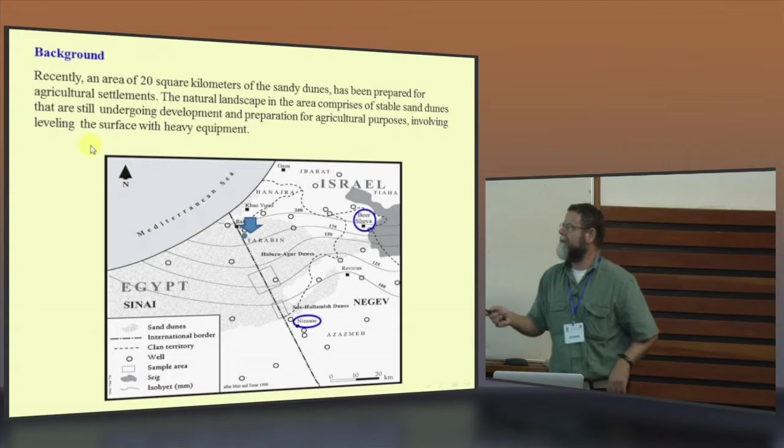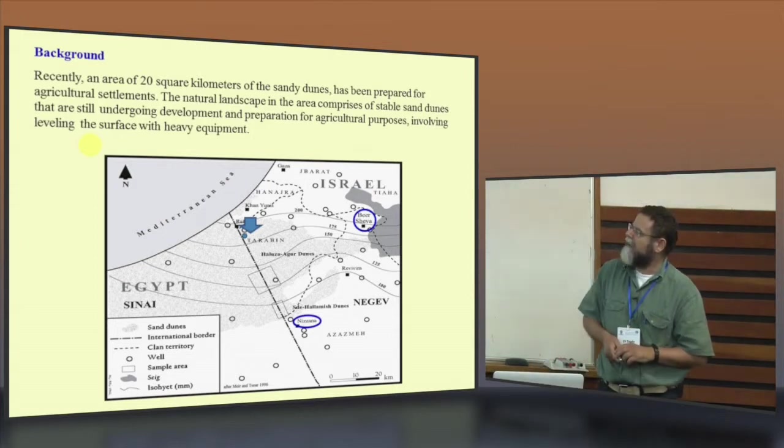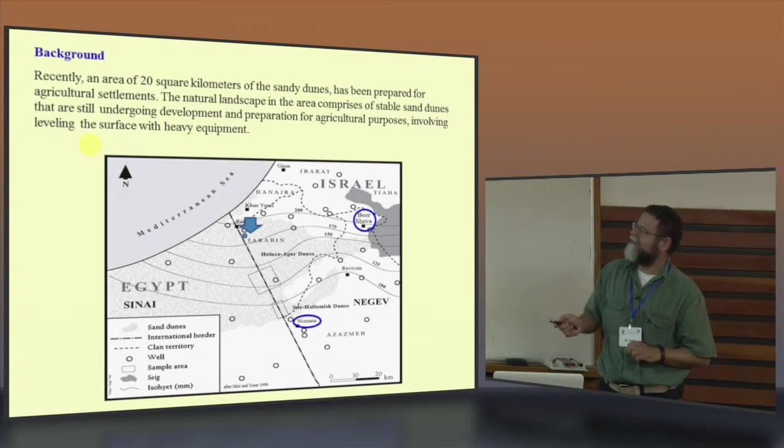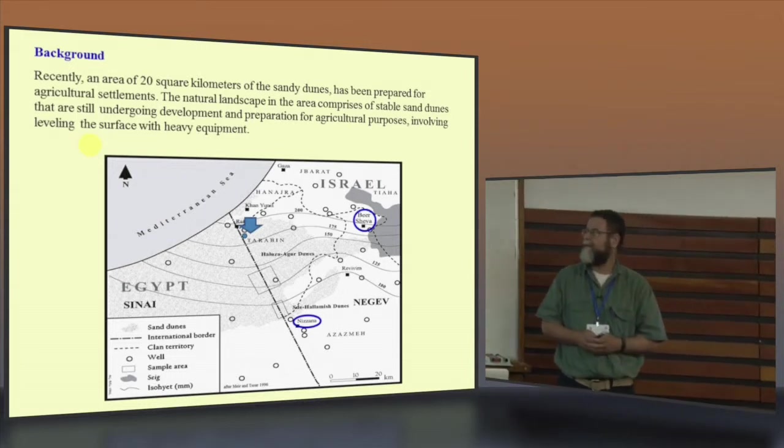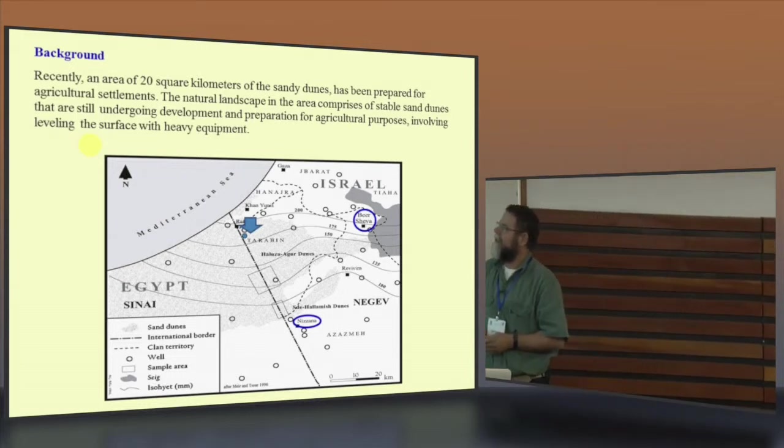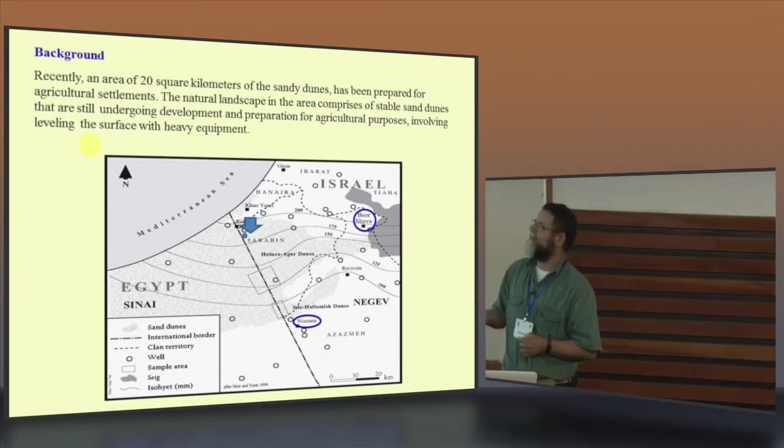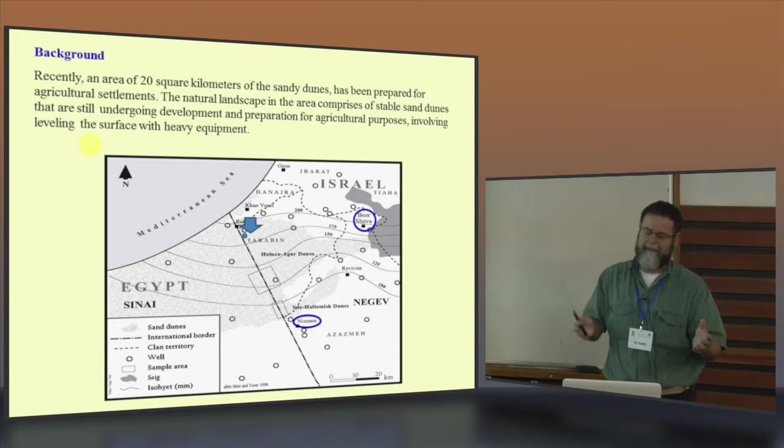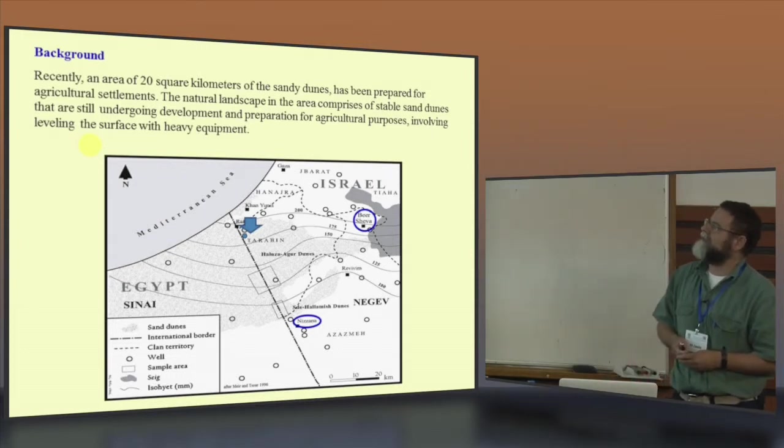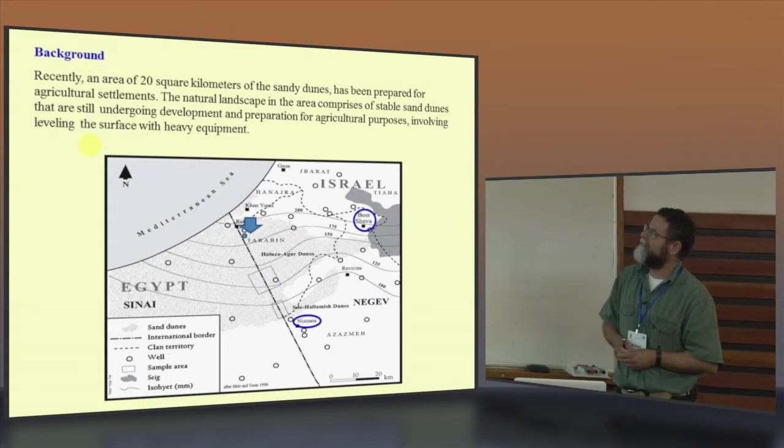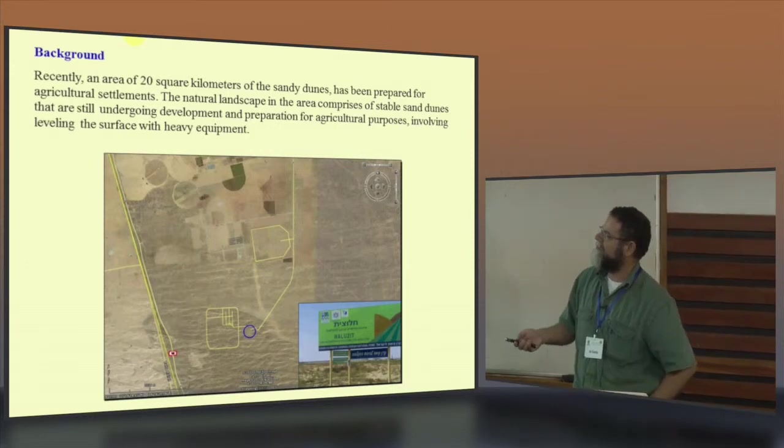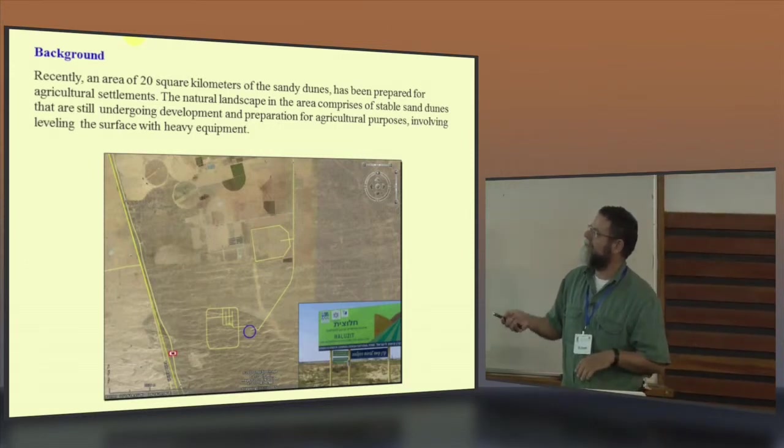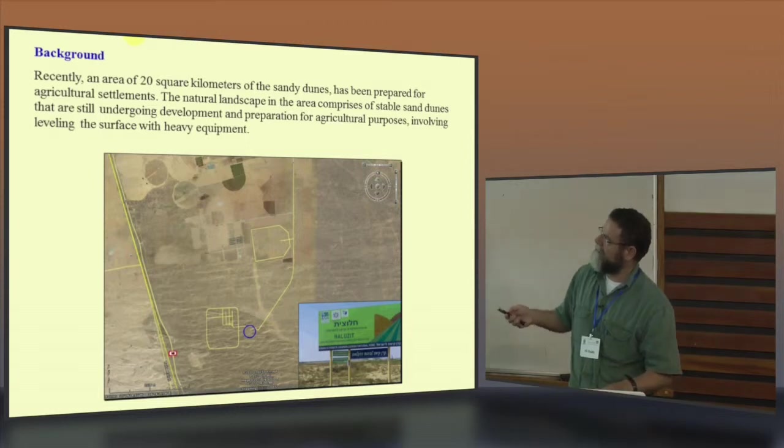This is the area that we work on, northeastern Negev. The problem in this area, why we came up with the idea, is that when they want to build a new settlement in this area, they took about 20 square kilometers of the sandy dune and just flattened them with heavy equipment for agriculture purpose. This is the new settlement in this area, and you see all the heavy work that they did over there.